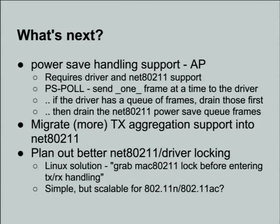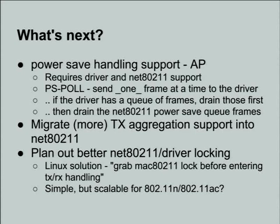Power saving is a pain, especially with 11N aggregation, because we need to legitimately leak one frame at a time whenever the station sends a PS poll frame. Some frames are in the power saving queue, some are in the ifnet queue, and some are actually being given to the hardware to send before the station went to sleep. I need to make sure all the frames being sent to a station get correctly paused and put back on a retry list, and we don't retry them until either the station wakes up and sends a null data frame or sends a PS poll frame, and then I need to leak them in order, checking the driver and power saving queue. It's a bit of a pain, but I have a plan.